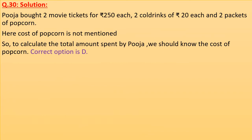Question 30 solution. Pooja bought 2 movie tickets for Rs. 250 each, 2 cold drinks for Rs. 20 each, and 2 packets of popcorn. Here, the cost of popcorn is not mentioned. So to calculate the total amount spent by Pooja, we need to know the cost of popcorn. Correct option is D.